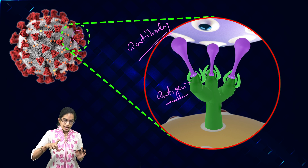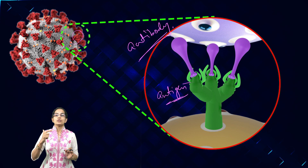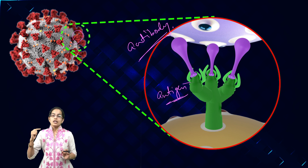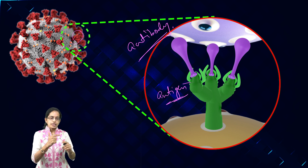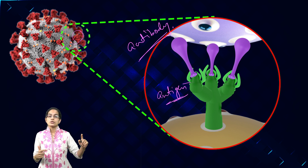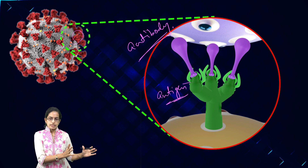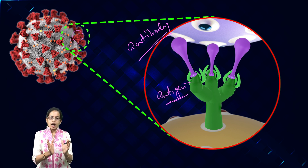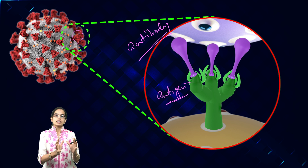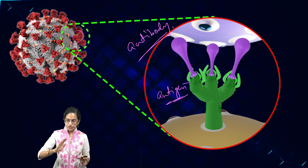Once antibodies are developed, immunity remains for a persistent period as long as these antibodies act as markers and trigger the immune system to develop a response against the infection. The amount of trigger is also important — slow triggers are good, while fast triggers could lead to cytokine storm, which will be covered in a separate lecture. The key idea is that antibodies are the structures that help us resist or fight infection.